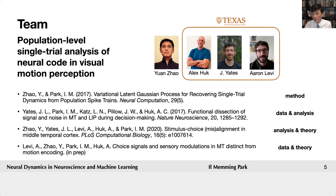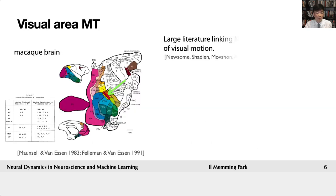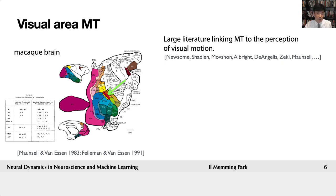His former grad students, Dr. Yates and Dr. Levy, collected most of the data. The brain area of interest for this part is the visual area MT, a very well-known area — the middle temporal area. It's been extensively studied both in terms of its anatomy and its role in visual motion perception.